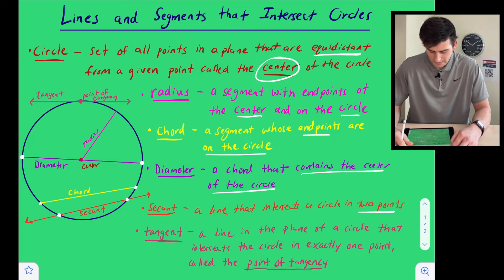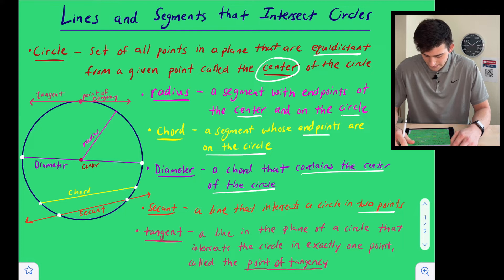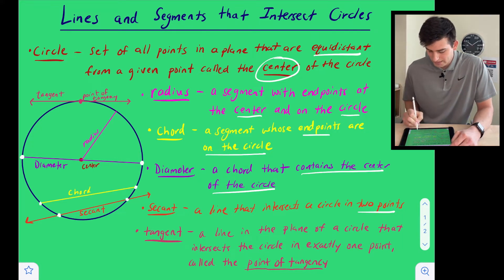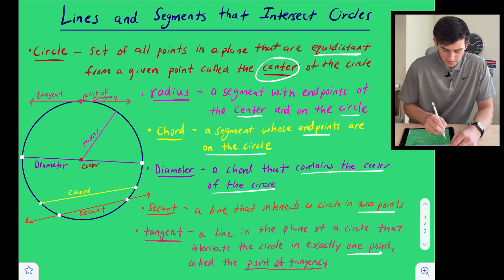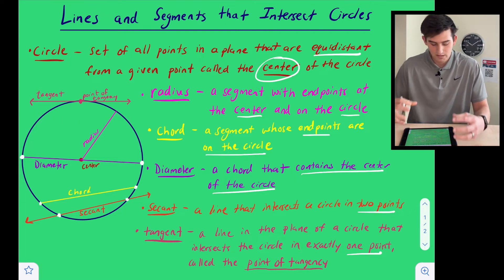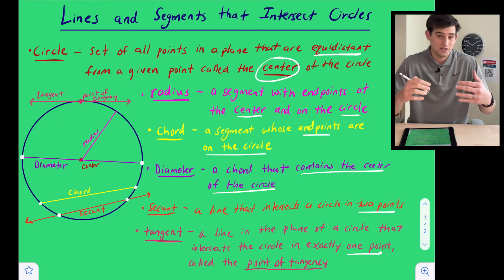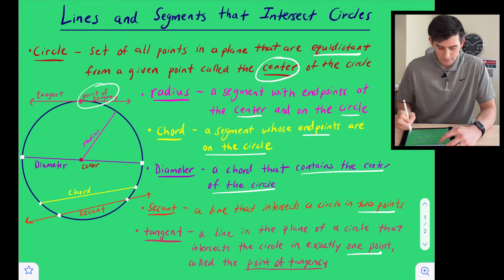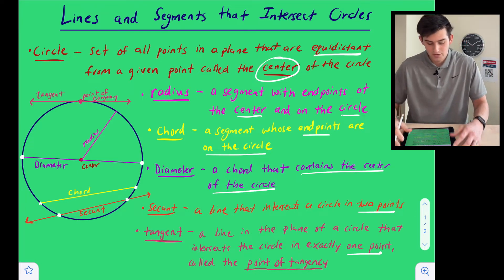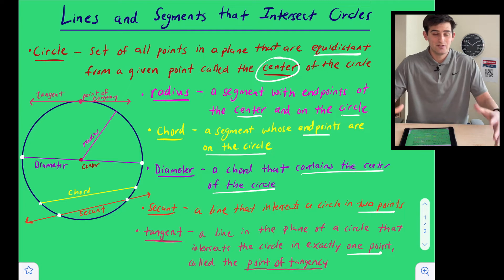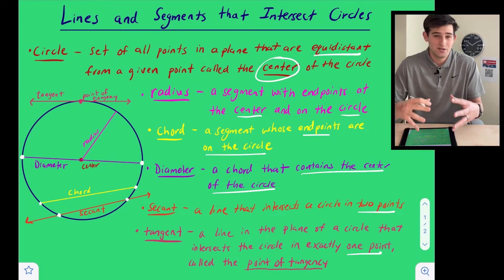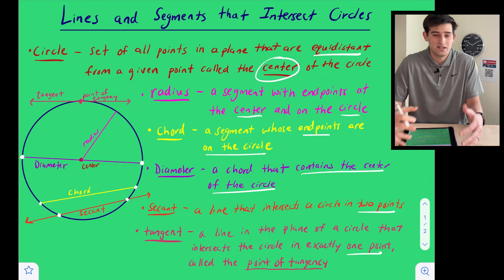Then we're going to look at a tangent. A tangent is a line in the plane of a circle that intersects the circle in exactly one point. We see our tangent line up here and the point at which the tangent intersects the circle — we call that the point of tangency. So those are about eight different vocabulary words: lines, points, and segments associated with intersecting a circle.